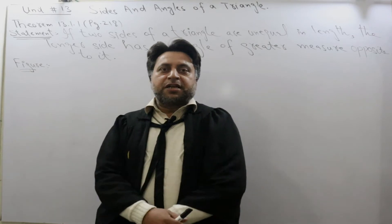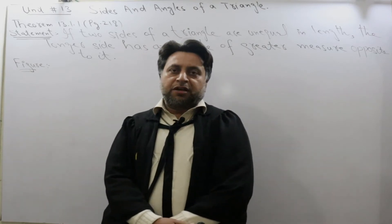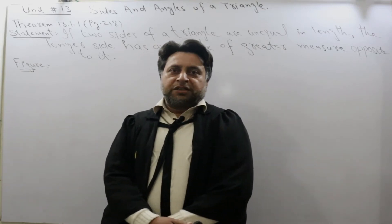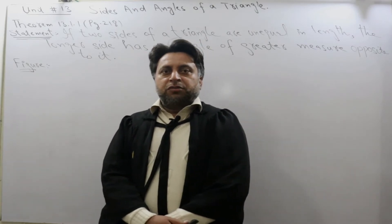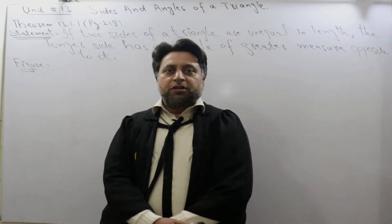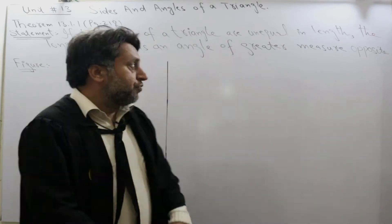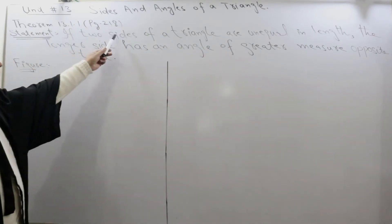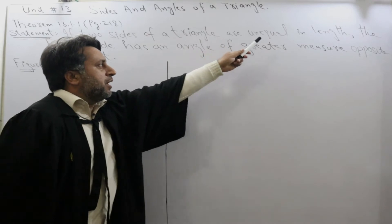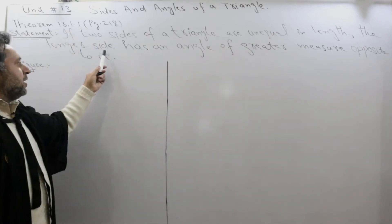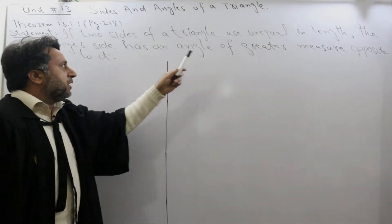The topic states that sides and angles of a triangle. To understand this topic, we do theorem 13.1. The statement of that theorem is that if two sides of a triangle are unequal in length, the longer side has an angle of greater measure opposite to it.